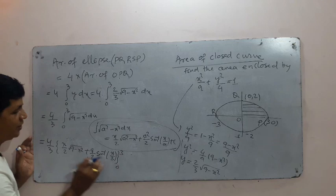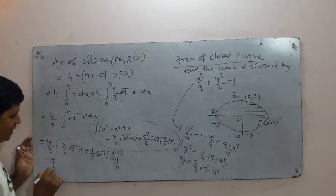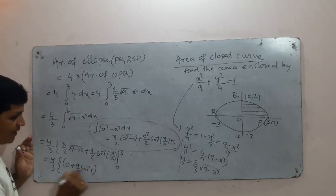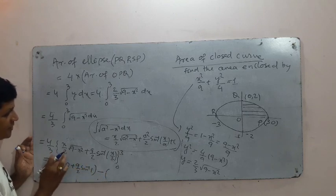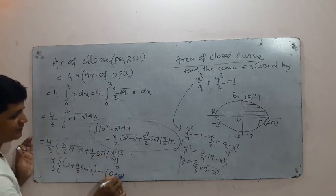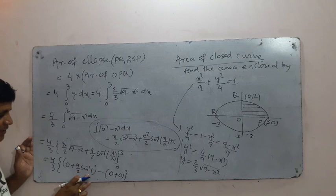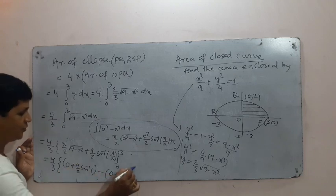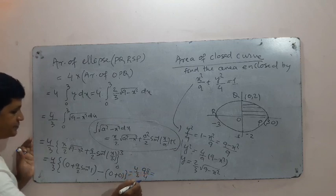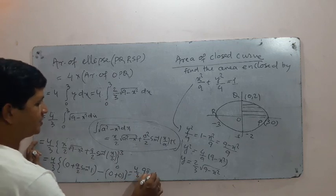So the upper limit gives 0 + (9/2)(π/2). Putting x = 0, both terms become 0. Therefore: (4/3) × [0 + (9/2)(π/2) - 0] = (4/3) × (9π/4) = 3π.